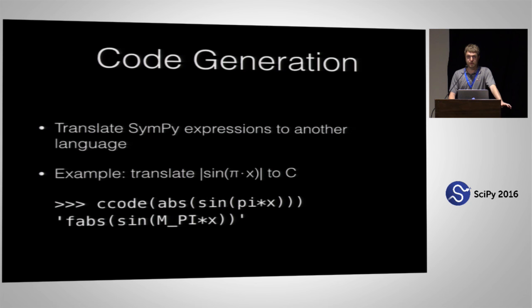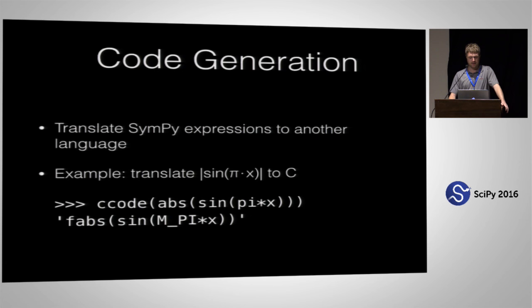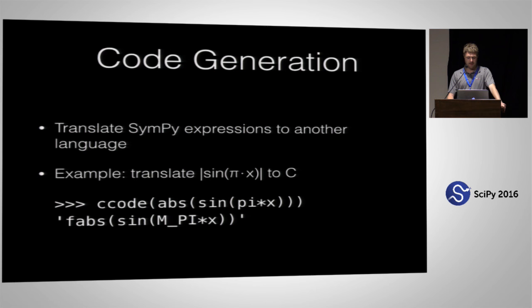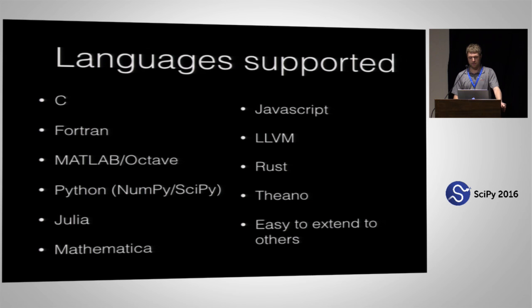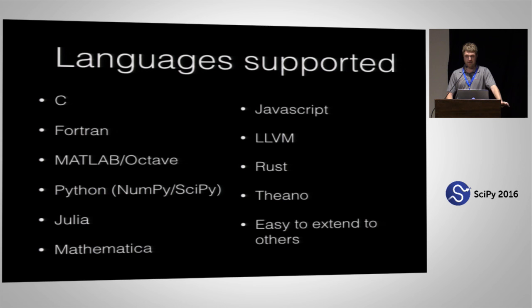What does code generation mean in terms of SymPy? Basically it means taking one of these SymPy expressions and translating it to some other language. Here we have the expression — the absolute value of sine of pi times x — and this function 'ccode' will convert it into C. You can see the absolute value in C is 'fabs' and 'M_PI' for the pi constant. This is supported by several languages: C and Fortran are the main ones, but we also support MATLAB, Octave, Python (basically NumPy and SciPy), Julia, Mathematica, JavaScript, LLVM, Rust, and Theano. It's designed to be very easy to extend to other languages.